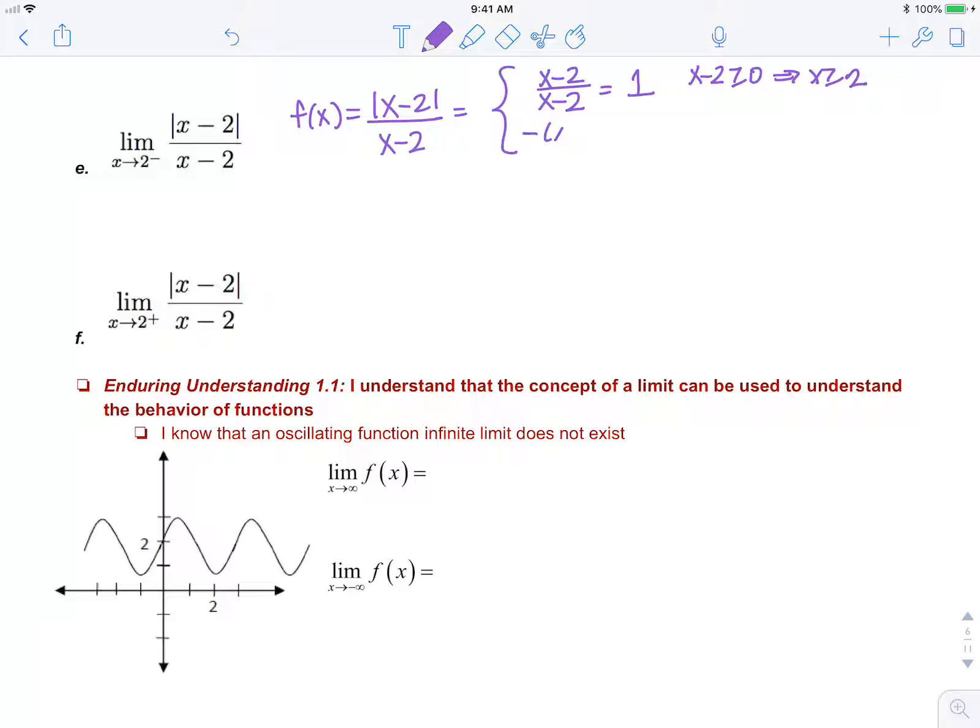And it's negative x minus 2 over x minus 2, which is negative 1 for x less than 2.